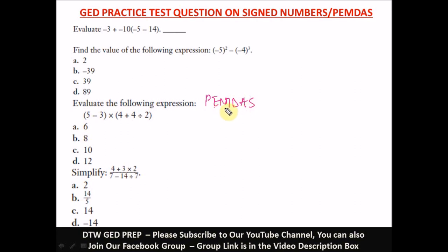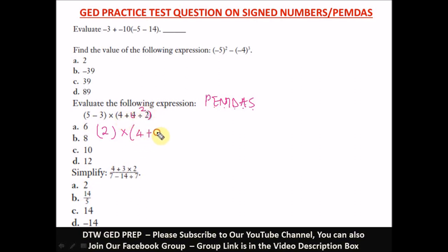The next question says: evaluate the following expression — this is under PEMDAS: P for Parenthesis, E for Exponent, M for Multiplication, D for Division, A for Addition, S for Subtraction. We resolve the first parenthesis: 5 minus 3 equals 2. Then inside the second parenthesis we have 4 plus 4 divided by 2. Division comes before addition, so 4 divided by 2 equals 2, then 4 plus 2 equals 6. Finally, 2 times 6 equals 12. The correct option is D.